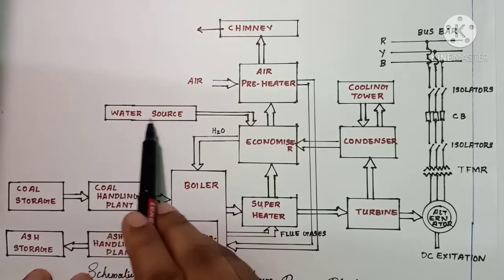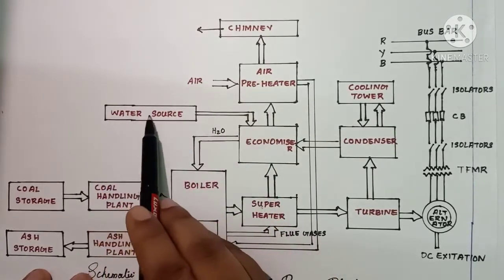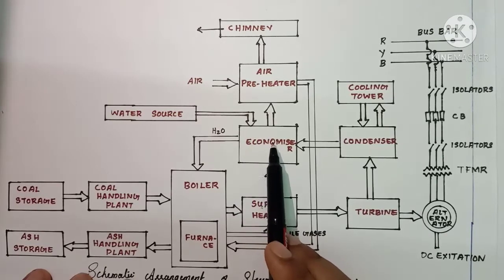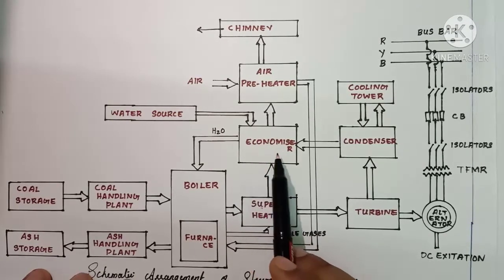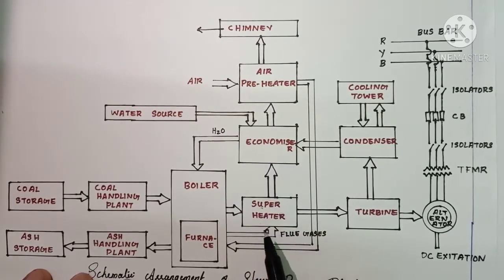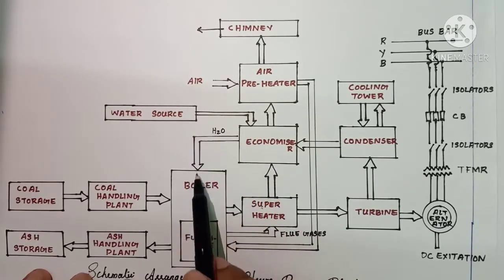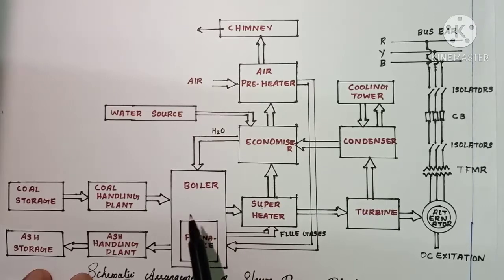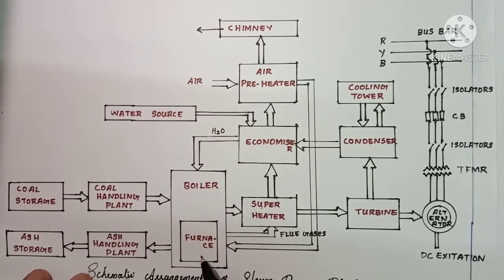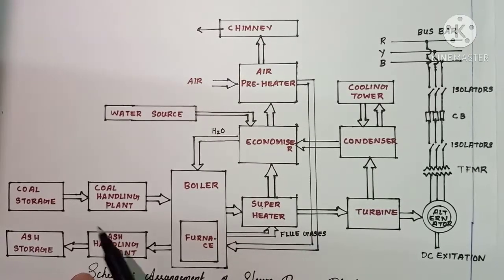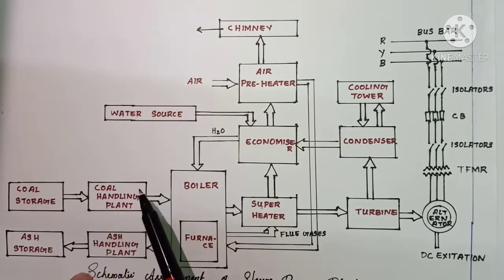In addition to the condensate, additional water from a water source is also received and heated at the economizer using the heat energy of the flue gases. This hot water is then fed directly into the boiler for the combustion cycle.